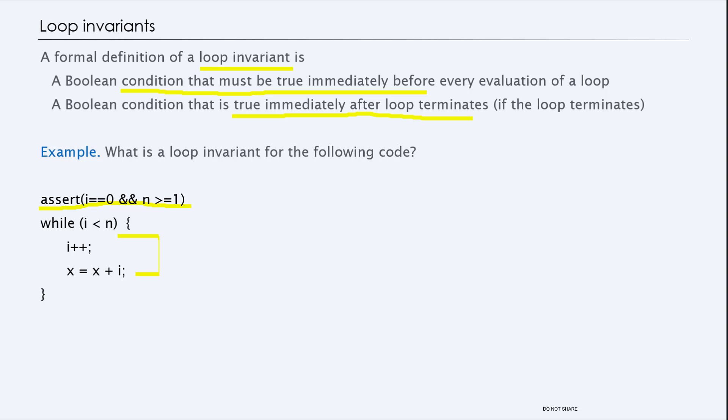Here we know that i changes in the loop and also x changes in the loop. So we can probably find invariants using i and x. For example, we might be able to show that i less than or equal to n is a loop invariant. We'll leave that discussion for later.